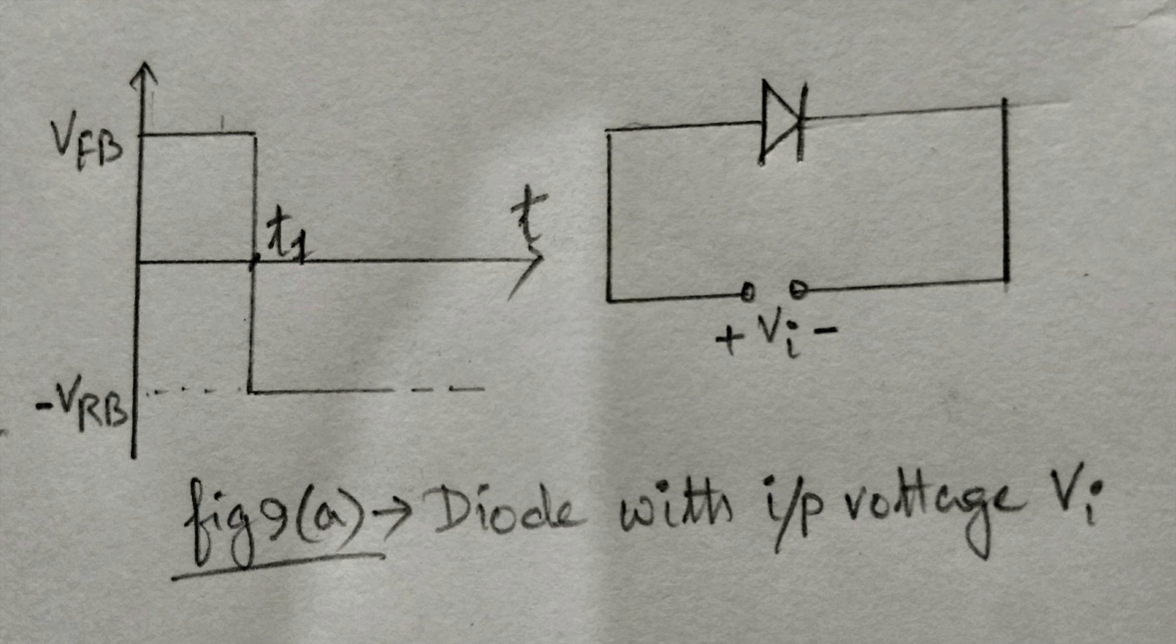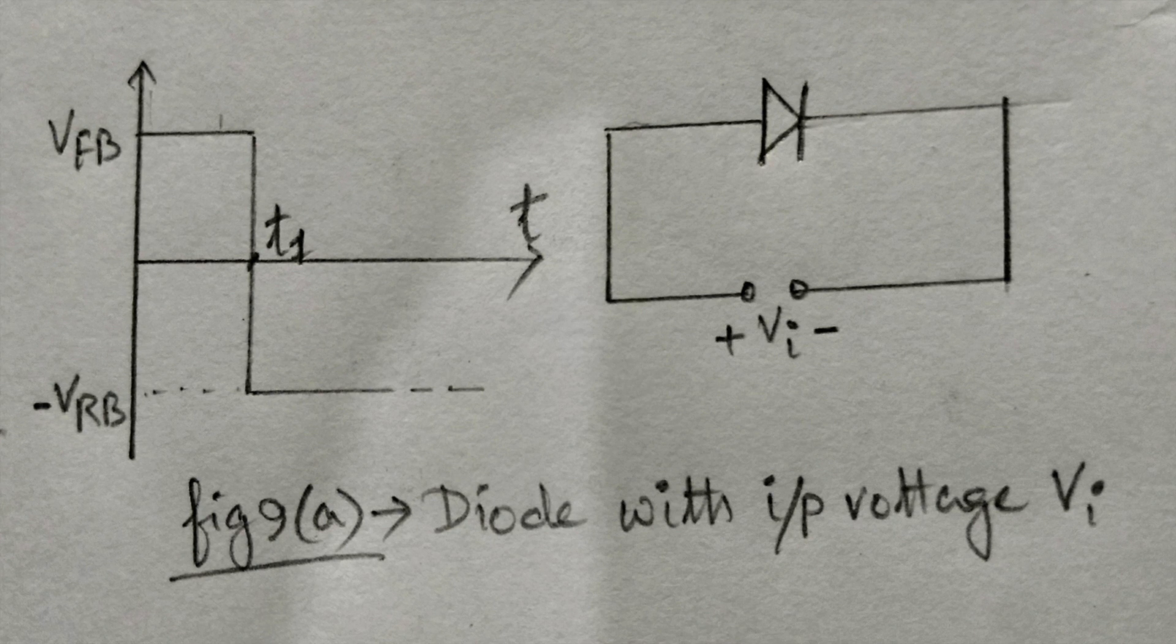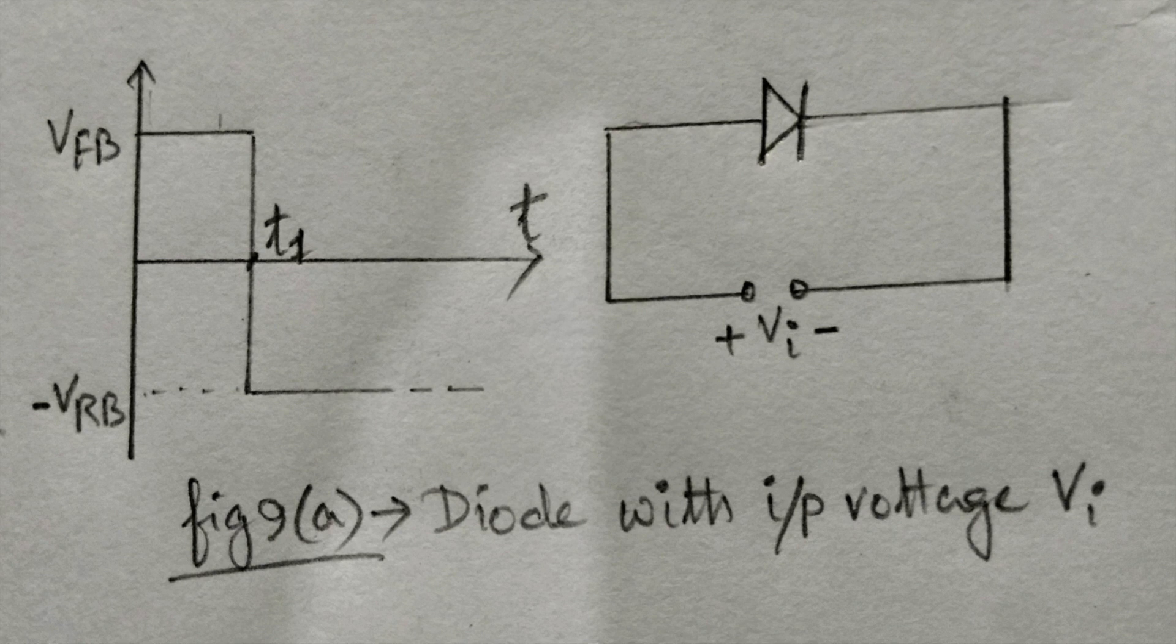Let us consider a diode, and the applied input voltage is as shown in this figure 9A. We will assume that the forward bias voltage is high enough to make the diode in conduction state.